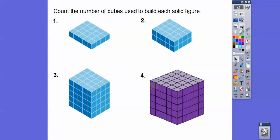Let's count the number of cubes used to build each solid figure. There are five here: five plus five is ten, plus five is fifteen, plus five more is twenty — four rows of five equals twenty. Now this next one is the same figure except it's stacked twice, so it's twenty times two, which is forty.